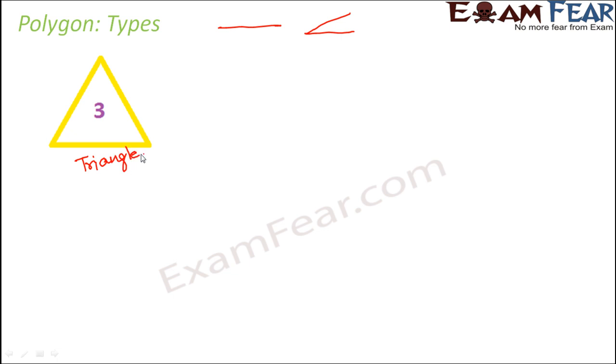And this polygon with three sides is called a triangle. Tri means three. Angle, we already know. That means three angles. So here you have three sides, three angles. So it is called triangle.